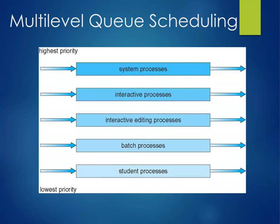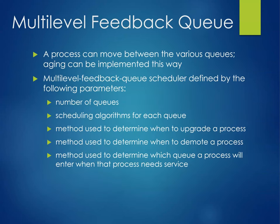There's also a multi-level feedback queue approach. A process can move between the various queues, and aging can be implemented this way. The multi-level feedback queue scheduler is defined by: the number of queues, the scheduling algorithms for each queue, the method used to determine when to upgrade a process, when to demote a process, and which queue a process will enter when it needs service.